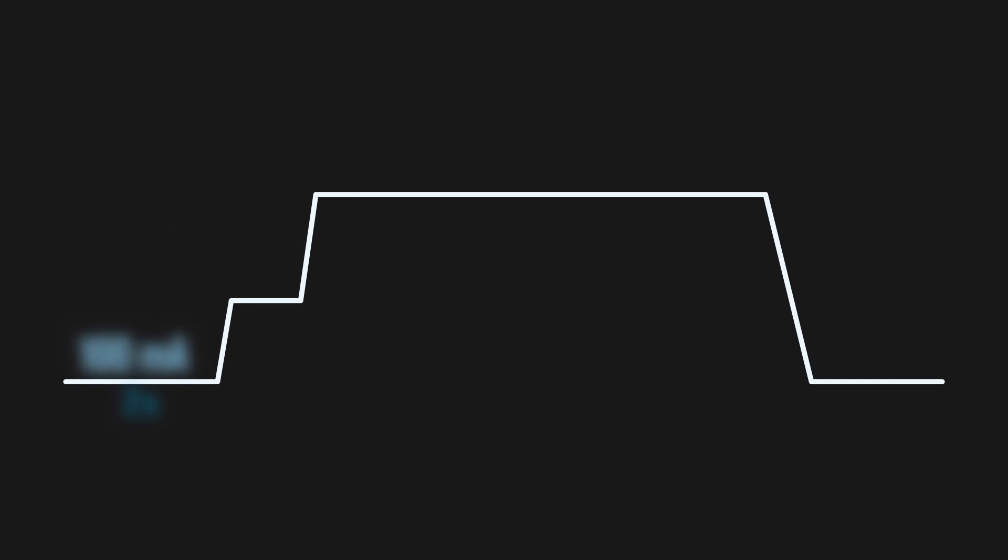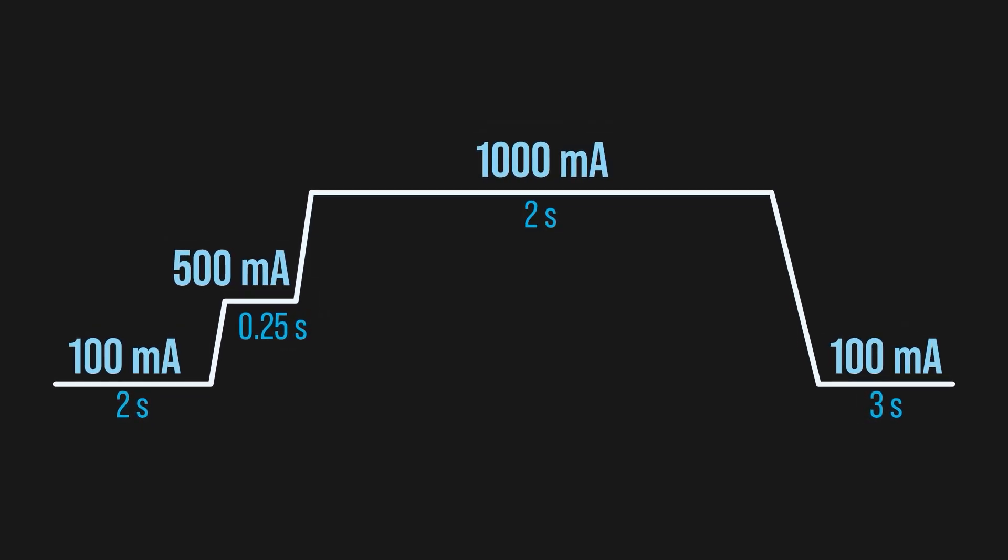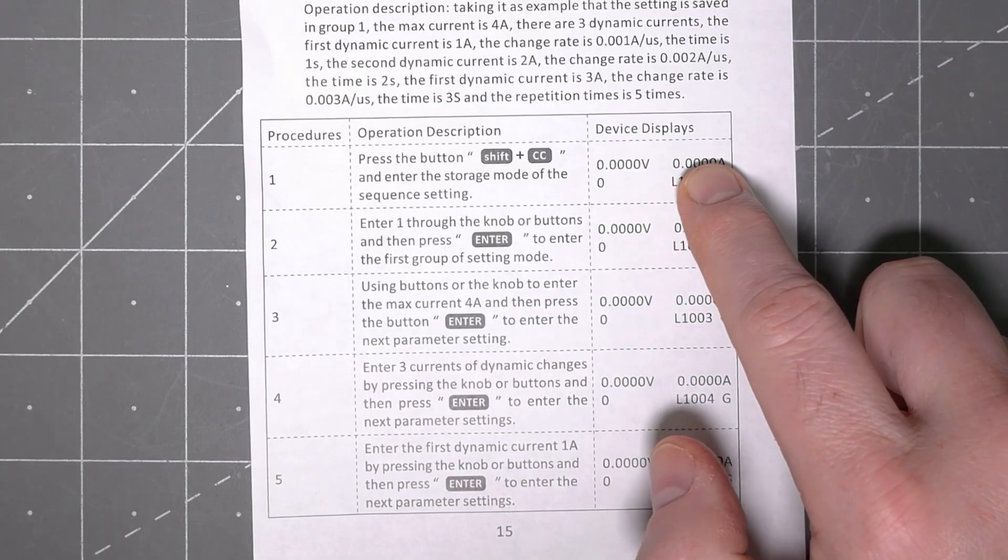No, we don't need your skills this time. This unit has a list function that creates a load profile. You set the current, the time, and the ramp rate for each step. Now, turns out this manual is pretty terrible. For example, this display is actually for the step after it. So, if you end up getting this particular unit, here's how you set up the list or sequential operation.